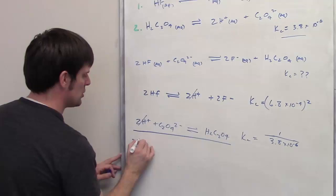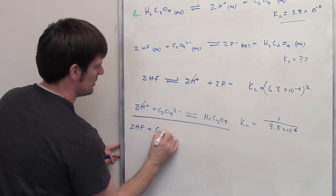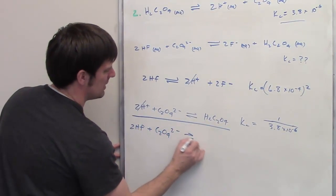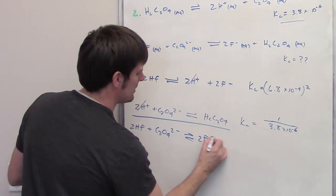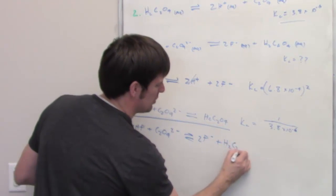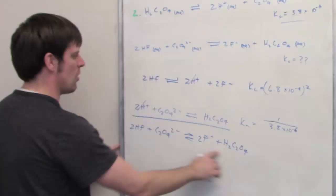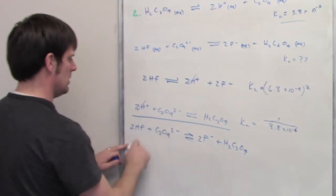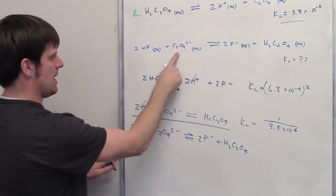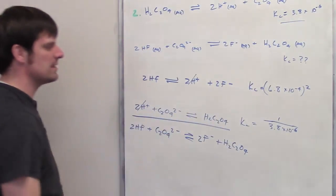I now end up with 2HF plus C2O4 2 minus yielding 2F minuses plus H2C2O4. Does that look like the overall target equation we're trying to get to? Yeah, I think it's looking pretty good. Yeah, every single term matches identically.